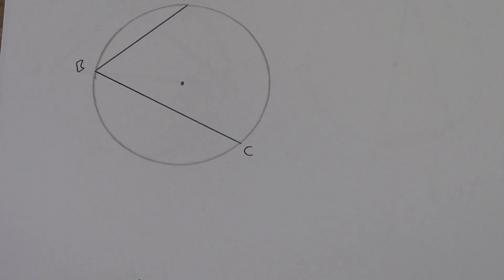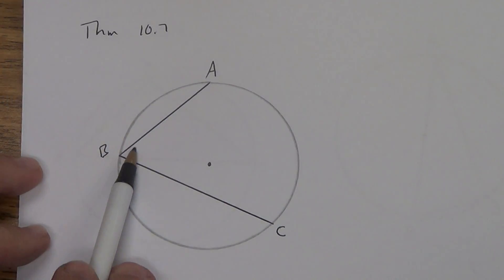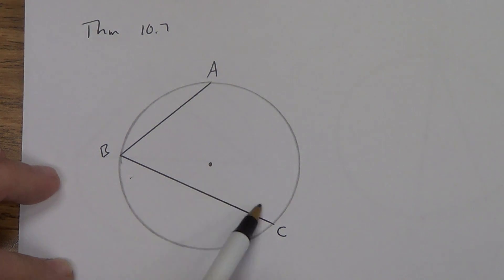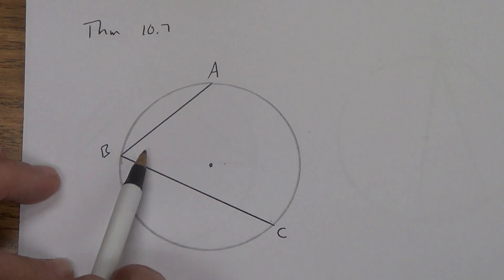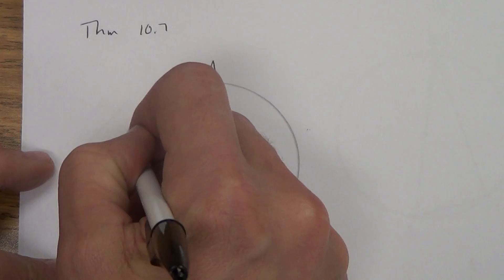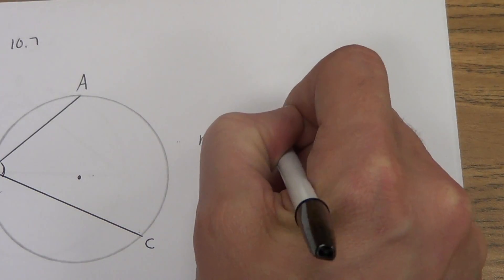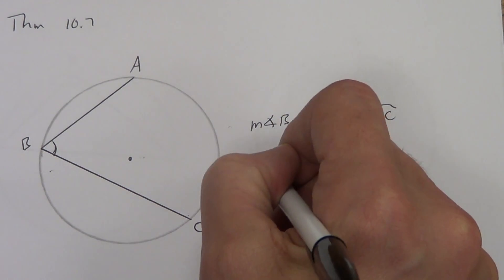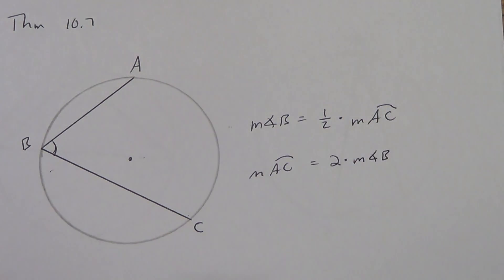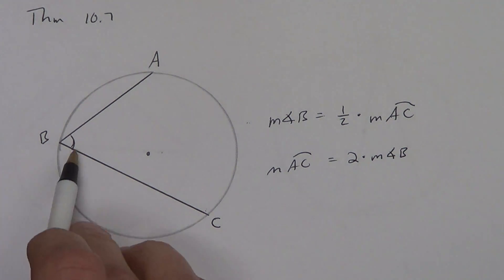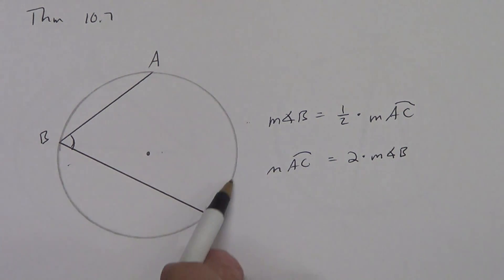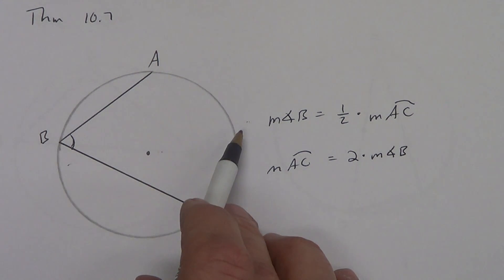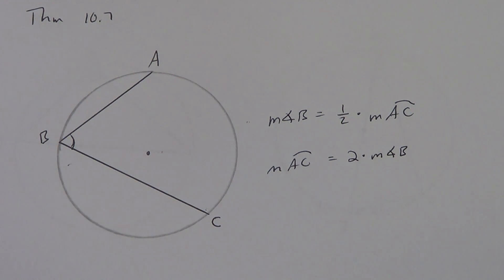Theorem 10.7 tells us how to find the measure of an inscribed angle and its intercepted arc. Remember that a central angle equals its arc. But in this case, the inscribed angle is going to be half of the arc. So the measure of angle B equals one-half times the measure of arc AC. Or we could rewrite it: the measure of arc AC is twice the measure of angle B. If the angle is 60, the arc is 120. If the arc is 140, the angle is 70. You've got to be able to work both ways.